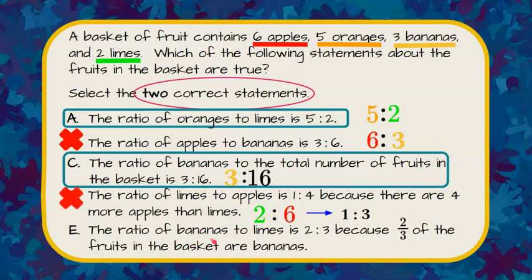E: the ratio of bananas to limes. Bananas is three, limes is two, so it would be three to two. The answer choice has it backwards — they listed limes to bananas instead of bananas to limes. So E is not true. Our answers are A and C.